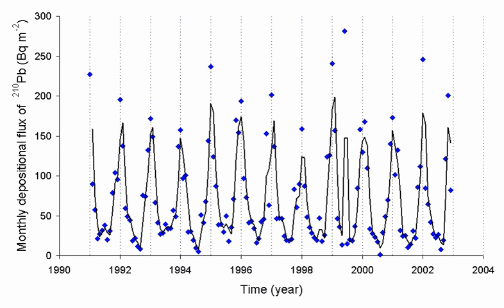while thoron was renamed 220Rn and actinon was renamed 219Rn, which caused some confusion in the literature regarding the element's discovery as while Dorn had discovered radon the isotope, he had not been the first to discover radon the element. As late as the 1960s, the element was also referred to simply as emanation. The first synthesized compound of radon, radon fluoride, was obtained in 1962.